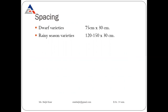Now spacing. Once we transplant the seedlings, we have to maintain spacing between the plants and between the rows. For dwarf varieties, the spacing should be 75 x 30 cm — 75 cm row-to-row distance and 30 cm plant-to-plant distance.